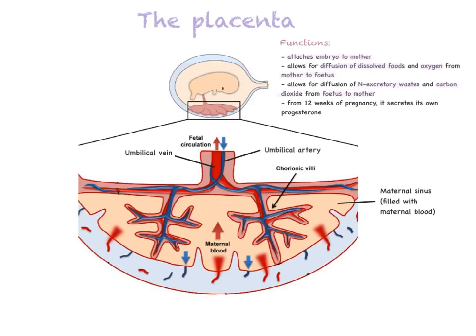The last function of the placenta is that it is able to produce its own progesterone. Progesterone's job is to maintain pregnancy. Once the corpus luteum has been formed, it produces progesterone, and after 12 weeks the placenta will start to produce its own progesterone to ensure secretion remains high enough. This keeps the endometrium thick, vascular, and glandular so that the placenta remains attached. Now let's look at the structure in more detail — the textbook has a paragraph but lacks the diagram, which is much more helpful.